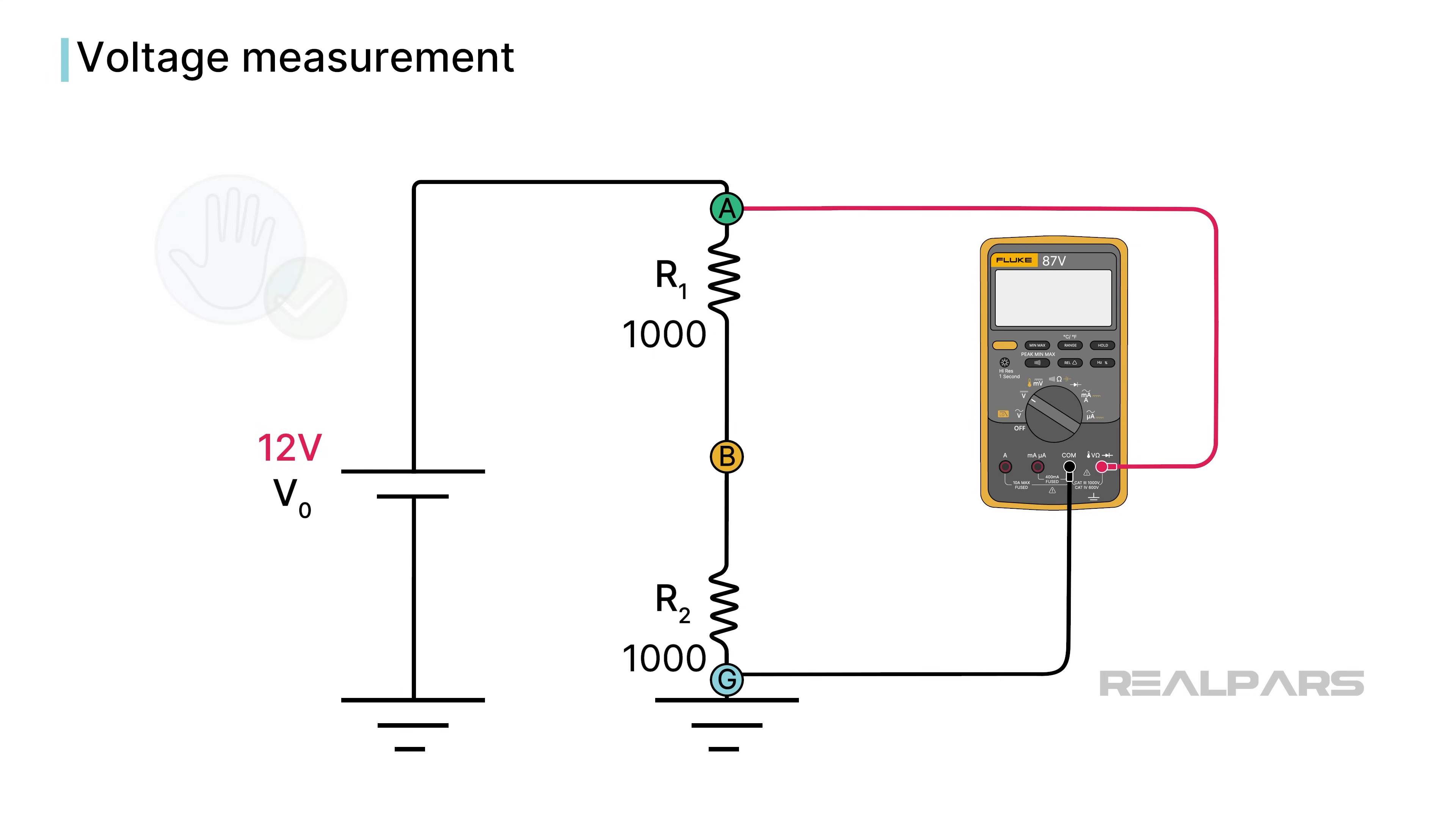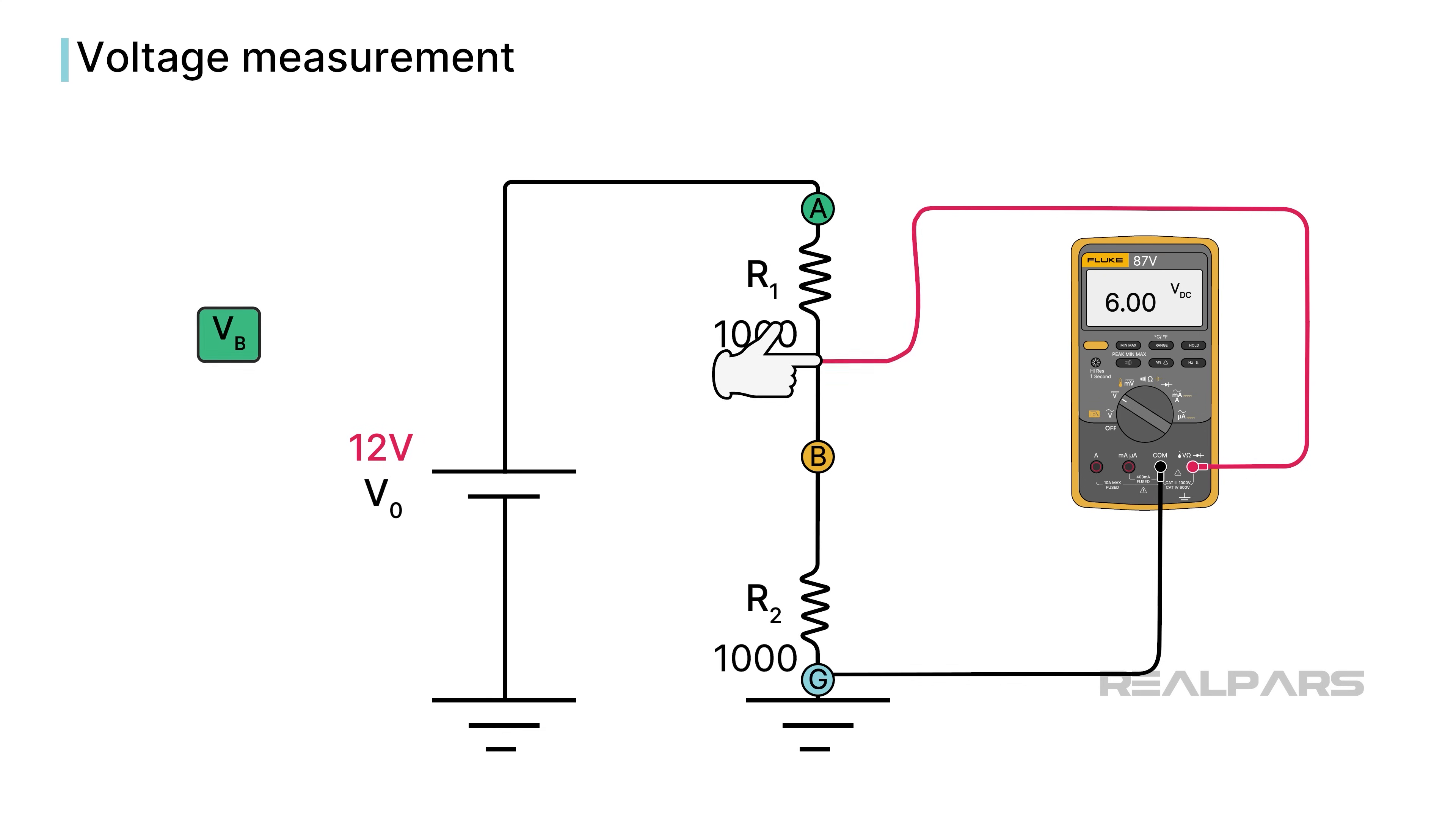If you want to know the voltage across R1, take a reading at point B and subtract it from the reading at point A. Point B will be 6 volts, and point A will be 12 volts. So, the voltage across R1 is 12 volts minus 6 volts, which equals 6 volts.